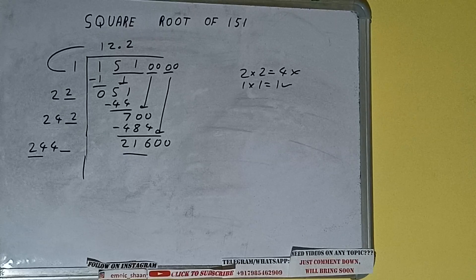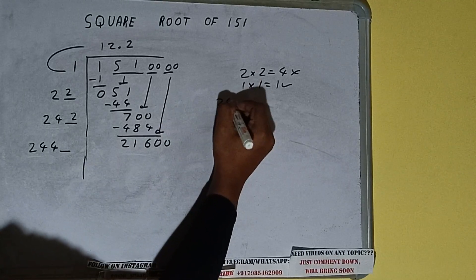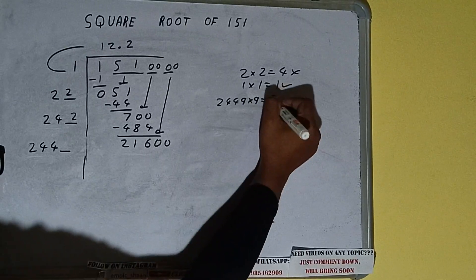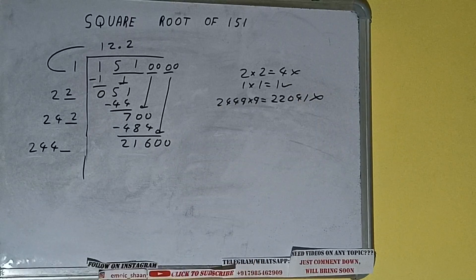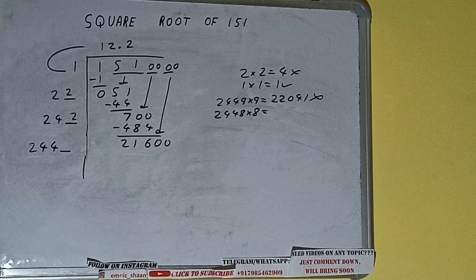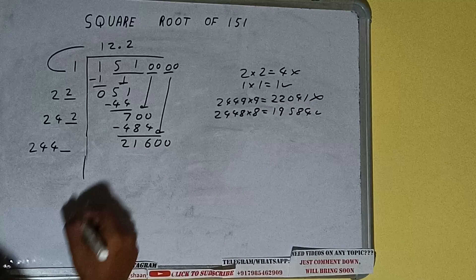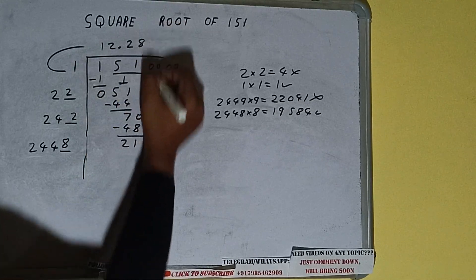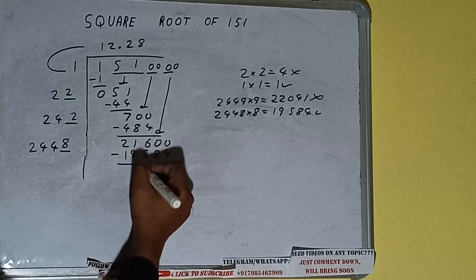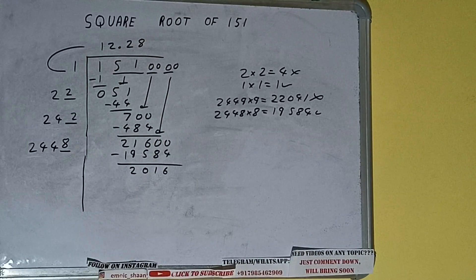Compare 24 with 216: 24 times 9 is 216, so we can try 9 times — 2449 into 9. We'll be getting 22041, which is bigger than this number, so we cannot take it. Let's try 8 times: 2448 into 8. We'll be getting 19584, which is good to take. So 8 here and 8 here — 19584 subtracted and we'll be left with 2016.